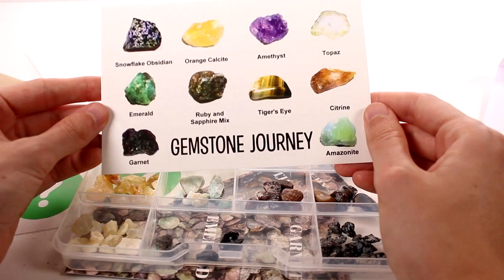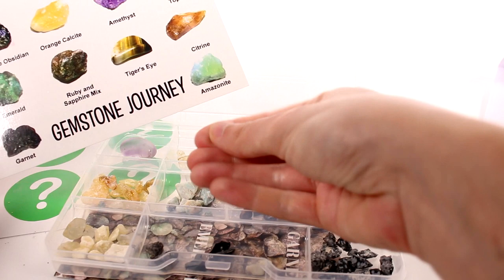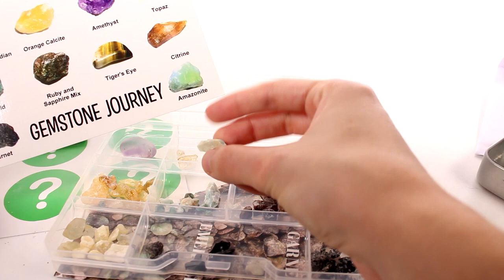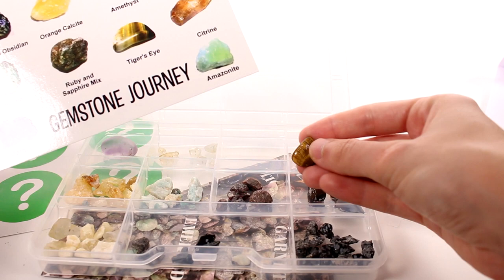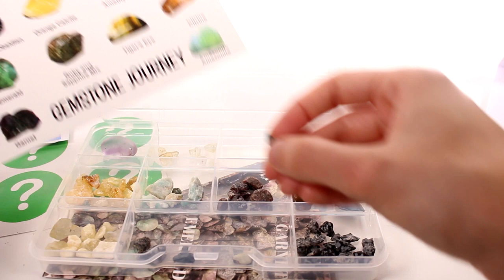Then the emerald, which I'm not sure if we got emerald. These kind of look like the little emeralds, but they also kind of look along the lines of the amazonite. I'm not sure how to say that. Then there's the ruby and sapphire mix, which I believe is this. Then the tiger's eye. Love the tiger's eye. It looks so good. Then we have the garnet, which is just the black stone.